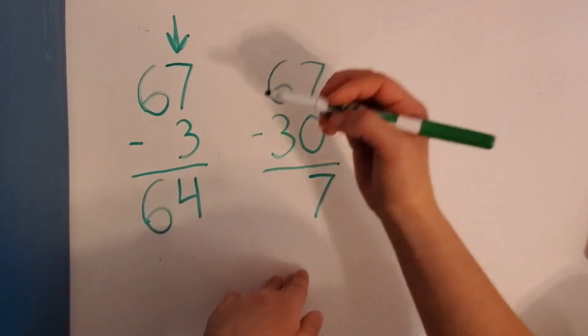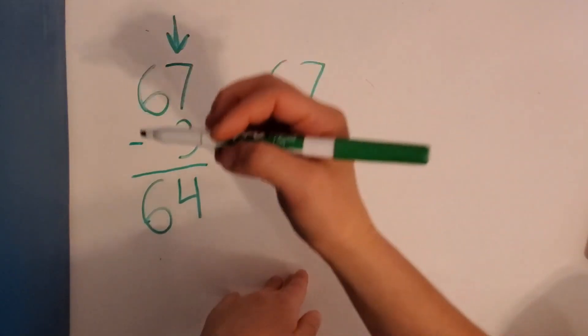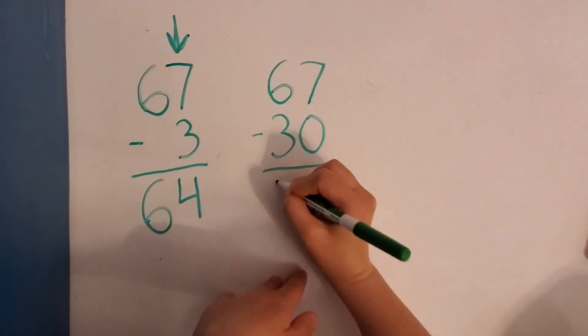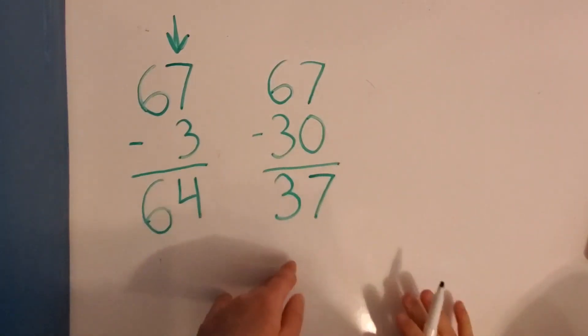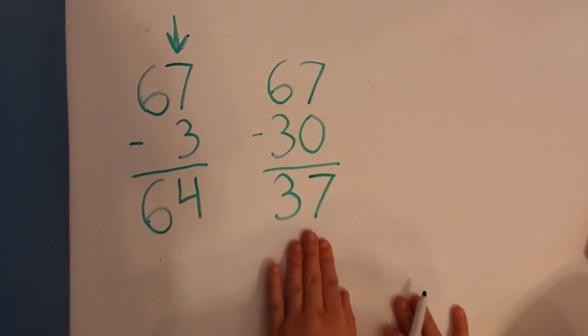So 6, 5, 4, 3. 6 minus 3 equals 3. So we were able to figure out that 67 minus 30 equals 37.